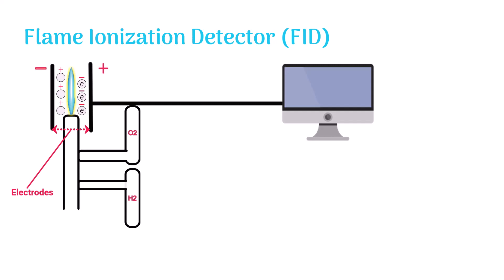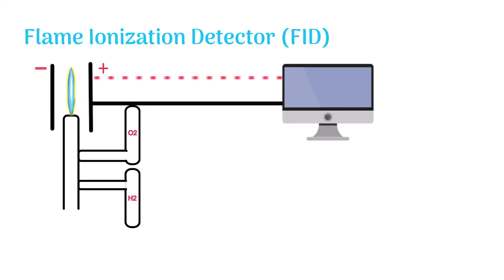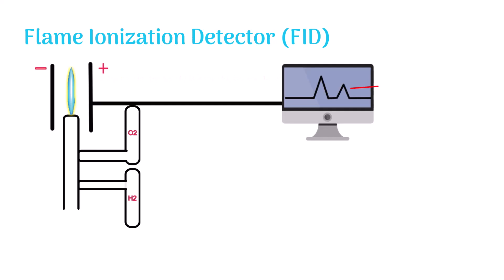The electrodes attract these ions and send signals to the computer in the form of current. The computer reads these signals and displays them as peaks on a graph. This graph is also known as the chromatograph.